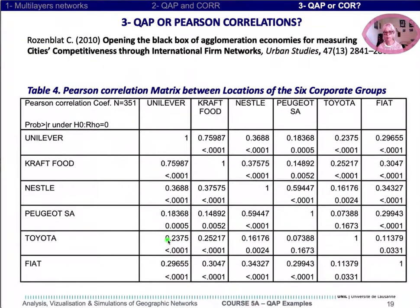We correlated the nodes of the six networks, forming a symmetric matrix. All the correlations are positive because of the mass effect, but with different levels of co-locations.